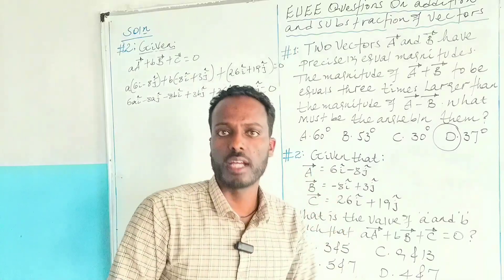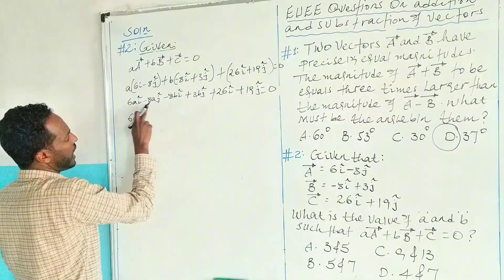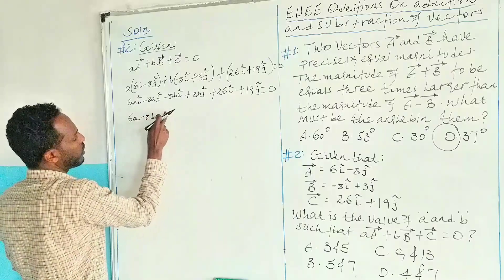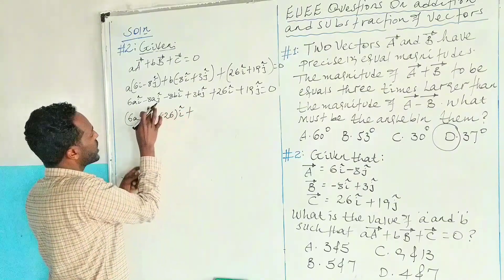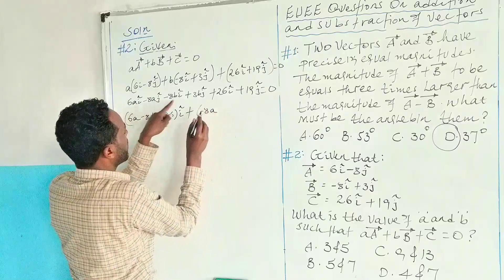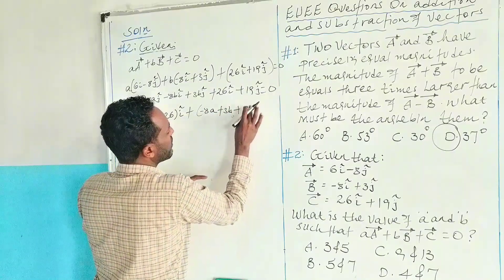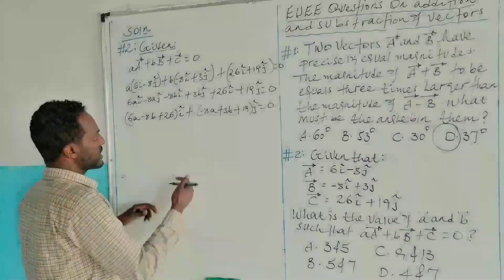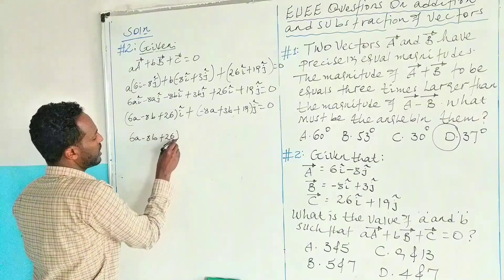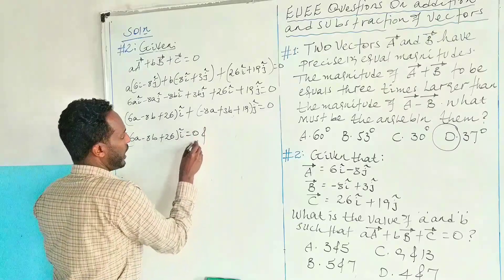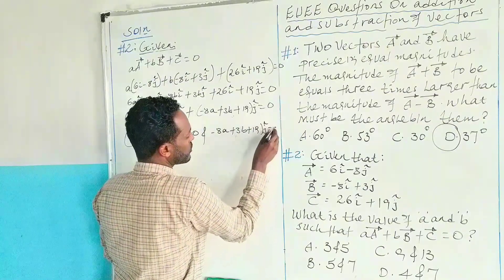We collect like terms along i and along j. Along i: 6a minus 8b plus 26 equals zero. Along j: minus 8a plus 3b plus 19 equals zero. So we have two equations with two unknowns, a and b.